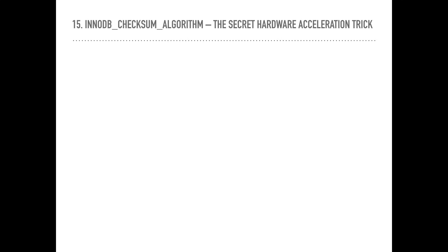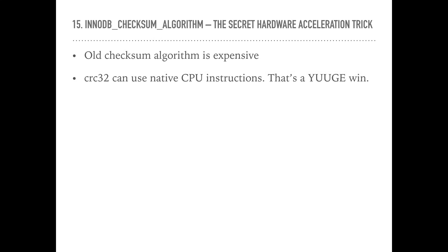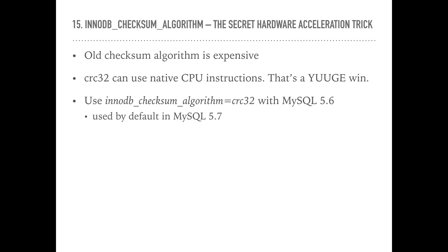InnoDB checksum algorithm: most mainstream CPUs nowadays support native CRC32 instructions, and MySQL can finally make use of that to improve the speed of calculating InnoDB checksums significantly. To enable that, set innodb_checksum_algorithm equals crc32. This is available since MySQL 5.6, and starting with MySQL 5.7.7, this is set by default. Checksums are calculated every single time a page or log entry is read or written, so this is definitely huge. This is totally safe to change on a server that already has tables created with checksum type InnoDB — in fact, you can change it dynamically online while the server is still running.